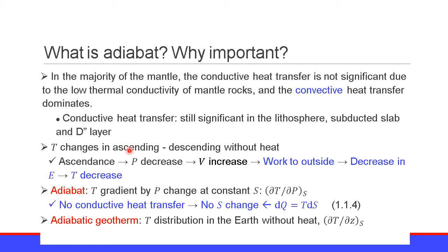When convective heat transfer dominates, how does the temperature change? By ascending and descending without heat. When ascending, the pressure decreases, then volume increases, then work is done to the outside, then the mantle rock decreases its internal energy. As a result, temperature decreases.